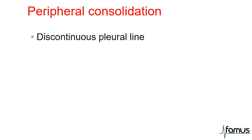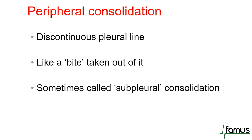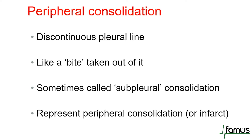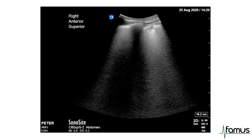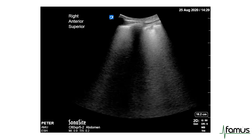The idea of peripheral consolidation is that you get a discontinuity of the pleural line. Normally you'd expect the pleural line to be smooth, flat, and white, but if it becomes thickened or irregular — and in particular if it becomes discontinuous — that suggests a peripheral consolidation. It almost looks like a bite has been taken out of it. It's sometimes called sub-pleural consolidation. In this video, you can see on the top right-hand corner a small area of peripheral consolidation. As we play this cine, you can see that the pleural line in that area is discontinuous — it almost looks like a bite has been taken out of it.